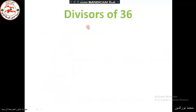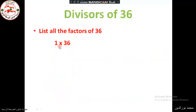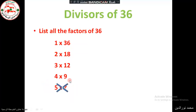Now let's find the divisors of 36. Let's find the factors first: 1 times 36, 2 times 18, 3 times 12, 4 times 9. 5 times — no, it doesn't work. Then 6 times 6. We see there is a double; when we see a double, we stop. We are done.